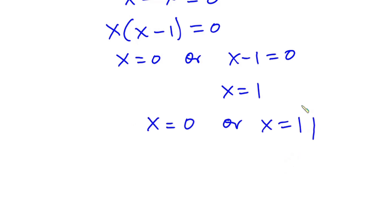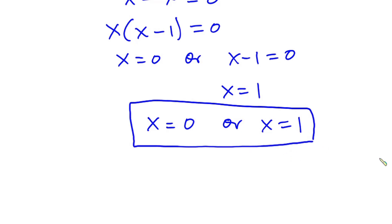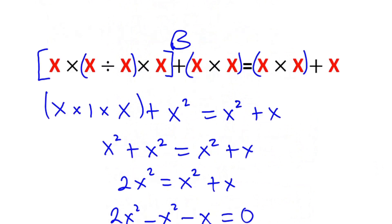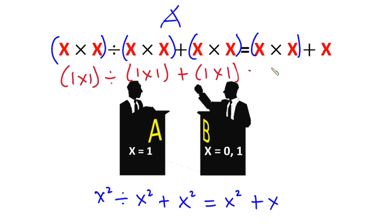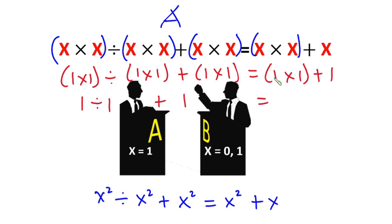Now being the judge for the day, I'm going to plug these values into the equation to see which one satisfies it. Beginning with contestant A's argument, the value for x is 1. Putting 1 into this problem, we have 1 times 1 divided by 1 times 1, plus 1 times 1, equals 1 times 1 plus 1. So 1 times 1 is 1, divided by 1 times 1 which is 1, plus 1 times 1 which is also 1, equals 1 times 1 plus 1.